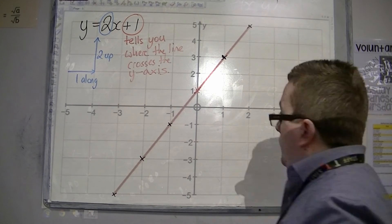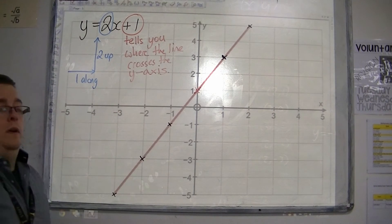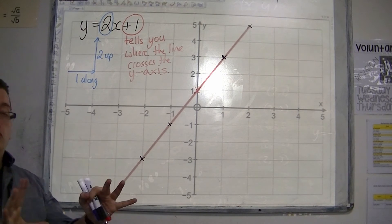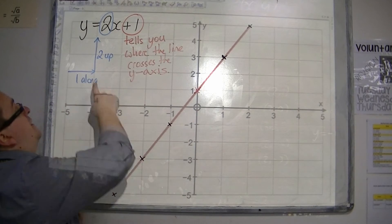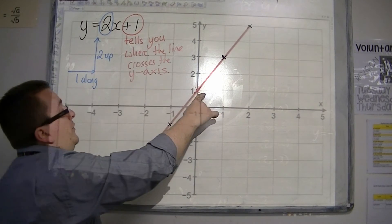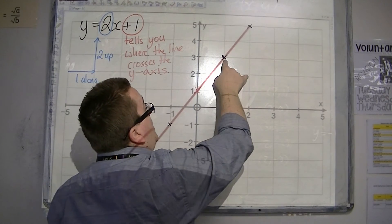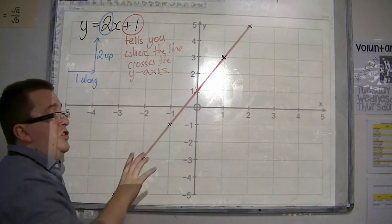That's y equals 2x plus 1. So the plus 1, just to reiterate, told us where it crossed the y-axis, tells us to go through that point. And then the 2 in front of the x tells us the gradient, how steep the line is. So 1 along, 2 up, in this case.